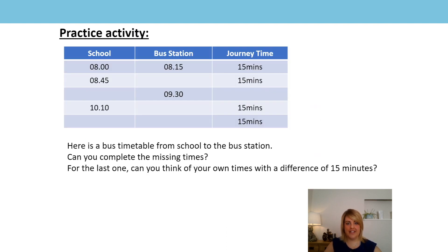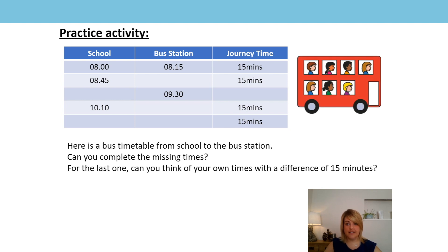Now it's over to you — your turn to have a practice. Here we have a bus timetable. The journey time from school to the bus station is 15 minutes long. So you can see the first one as an example: if we leave school at 8am, we will arrive at the bus station at 8:15, so it's taken us 15 minutes. I'm ready for a challenge — why not try this last one? Can you think of your own times with a difference of 15 minutes?